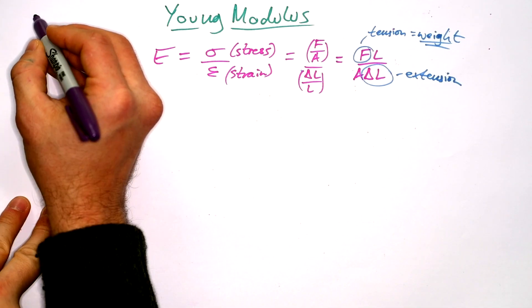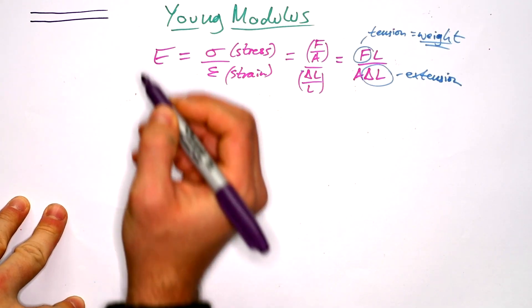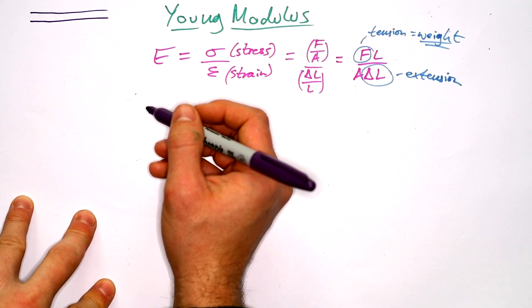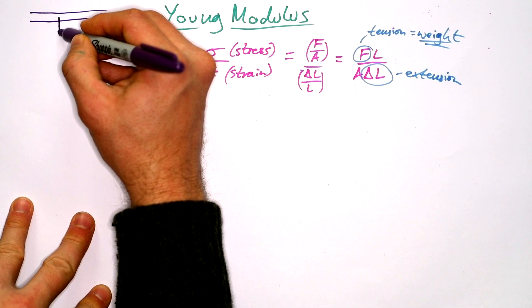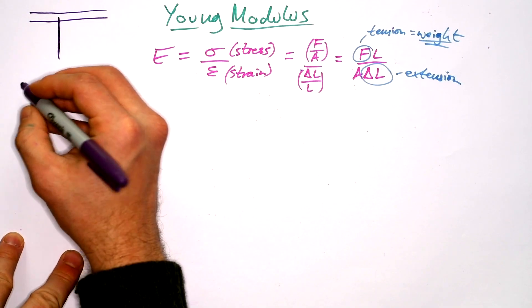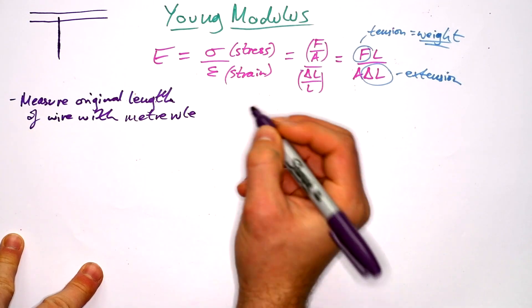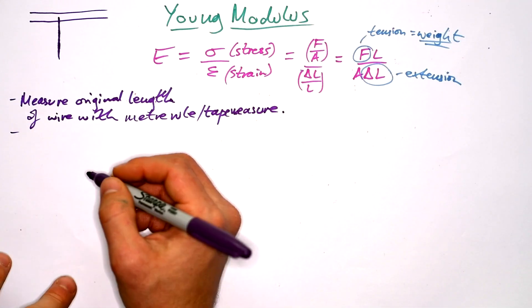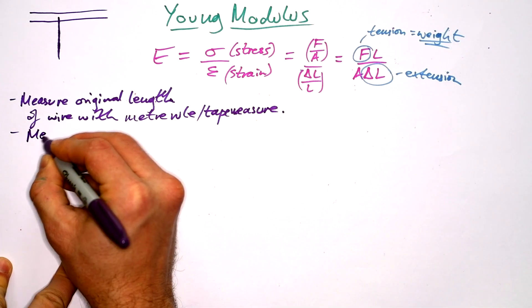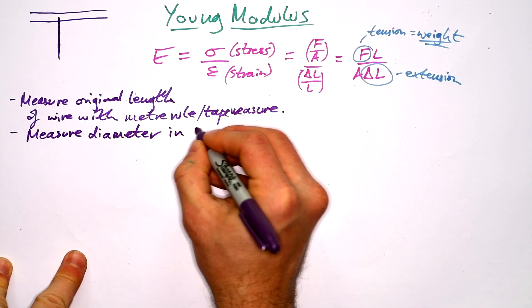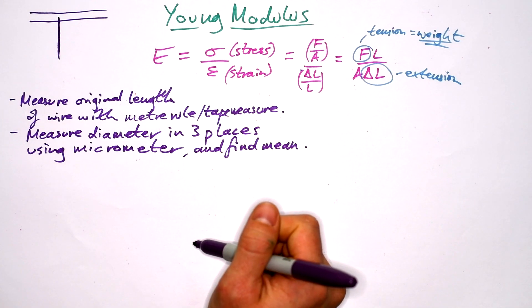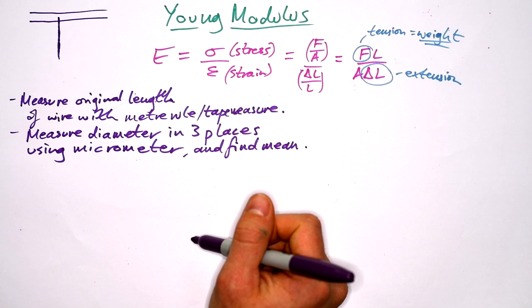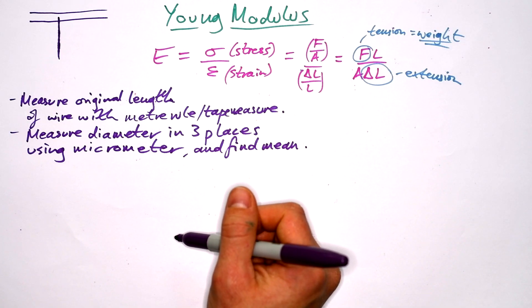So ideally what you want is one of those beams at the top of your room. And not everybody has these, so you might use a table and some pulleys, but you want a wire hanging off here. Now you're going to measure the original length of the wire with a meter rule, or you could use a tape measure. And before you start putting any weight in it as well, you also want to measure the diameter. And as per usual, we want to measure that in three places using a micrometer and find the mean. The uncertainty in your diameter is going to be half the range of your values. Or if they're all the same, I'd say the uncertainty is just the resolution of the micrometer, which should be 0.01 millimeters.